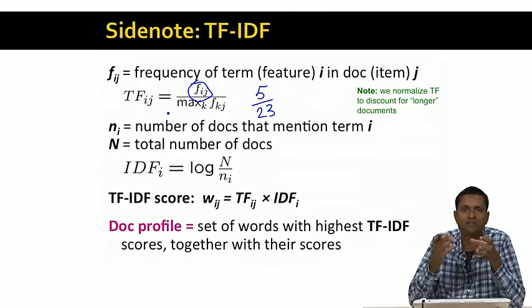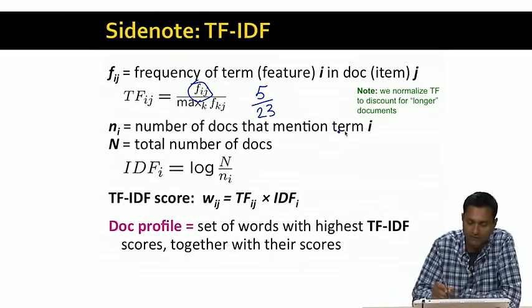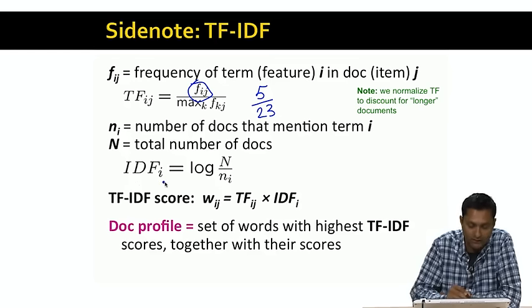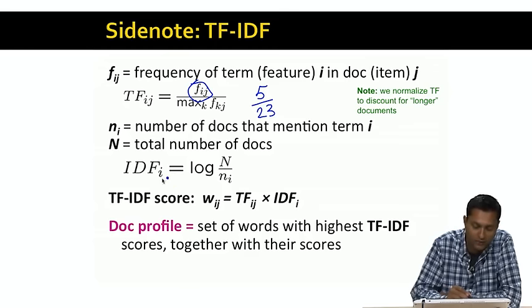But how do you compare the weight of different terms? A rare word appearing just a couple of times might be more important than a more common word like 'the' appearing thousands of times. This is where the document frequency comes in. Let n_i be the number of documents that mention term i, and let n be the total number of documents in the system. The inverse document frequency (IDF) for term i is obtained by dividing n by n_i and then taking the logarithm of that fraction. The more common a term, the larger n_i, and the lower the IDF. The IDF function gives lower weight to more common words and higher weight to rarer words.